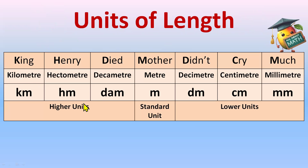We need to remember the sequence. For that, we'll just learn the mnemonic: King Henry died, mother didn't cry much. So K is for kilometer, H for hectometer, D for decameter, meter, decimeter, centimeter, and M is for millimeter.